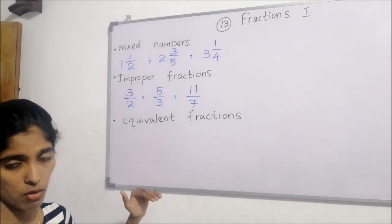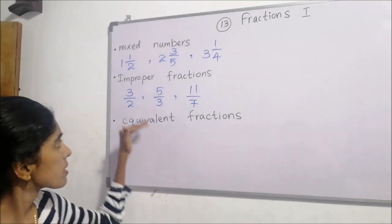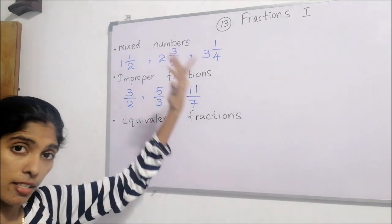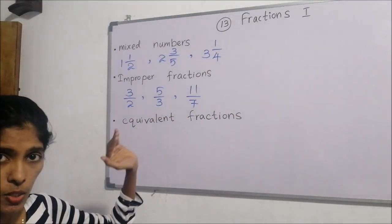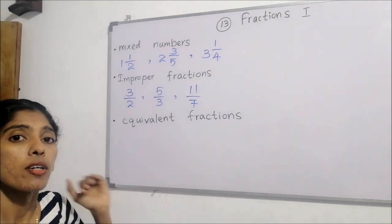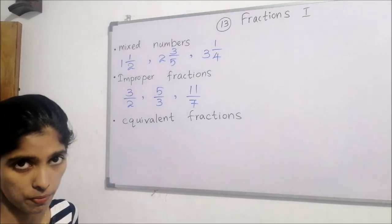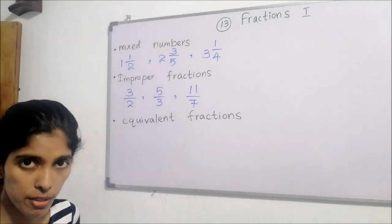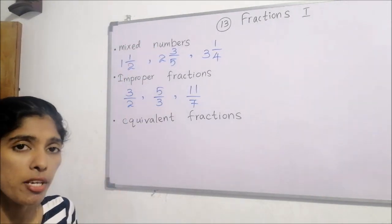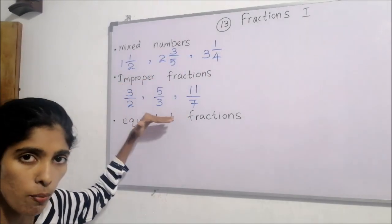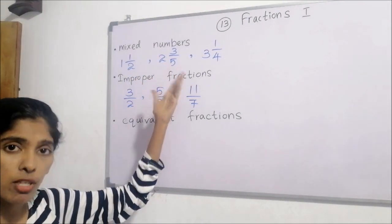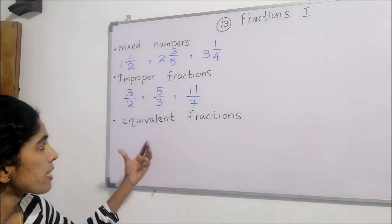The next concept is improper fractions. Observe the numerators and the denominators — every time the numerators are bigger than the denominators. Remember: if the top number is bigger than the denominator, that is called an improper fraction. There is a relationship between mixed numbers and improper fractions — any mixed number can be written as an improper fraction, and any improper fraction can be converted into a mixed number.